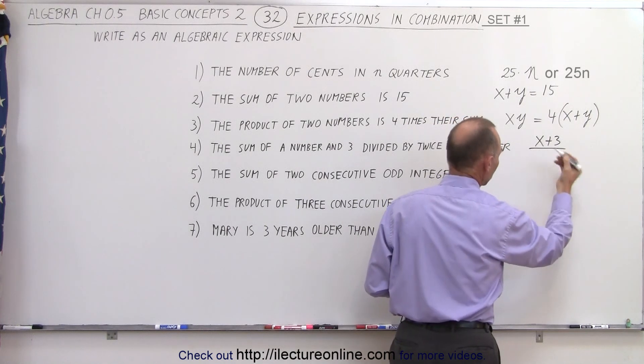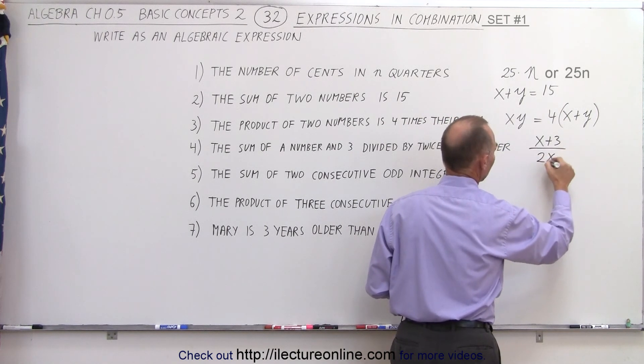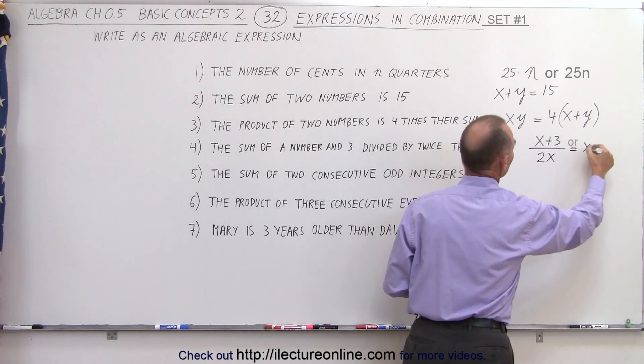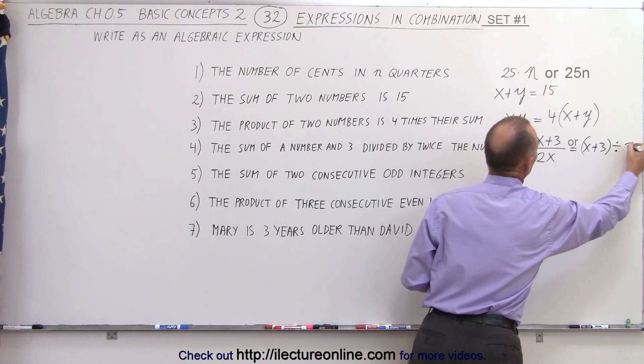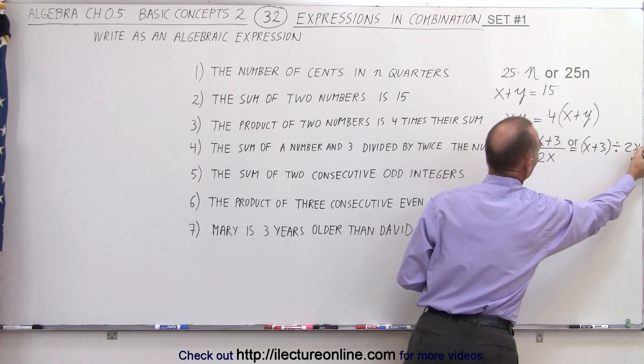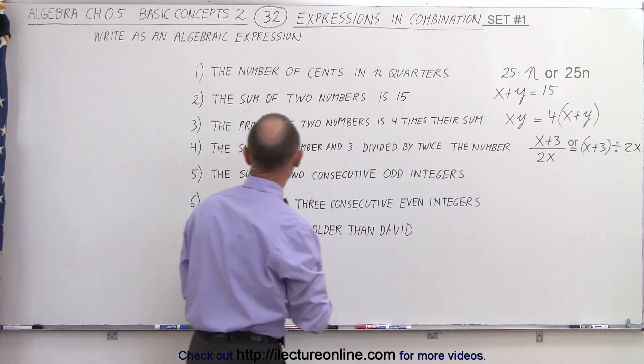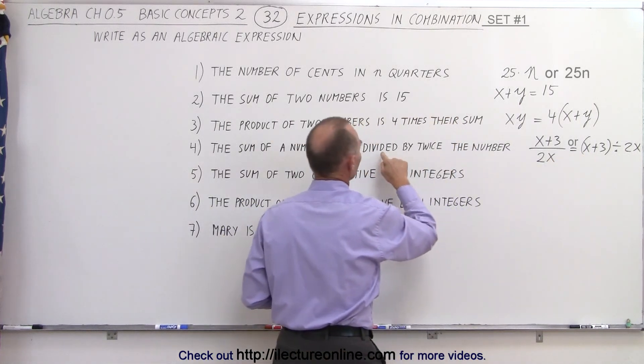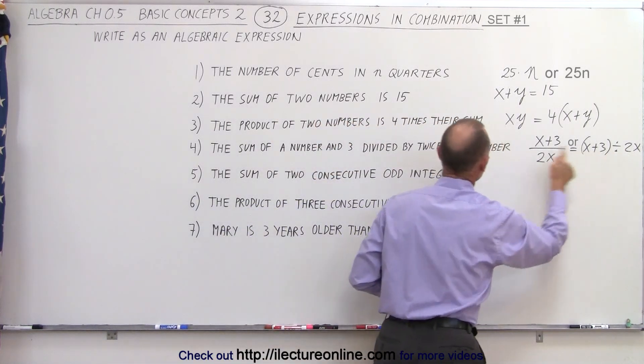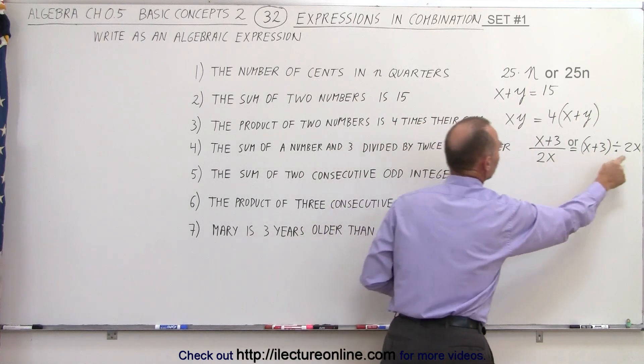Which can be written as x plus three divided by two x. So either one of those statements means exactly the same thing. So again, let's read it. The sum of a number and 3, that's x plus three, divided by twice the number, two times x.